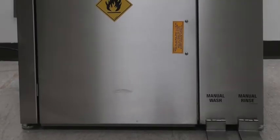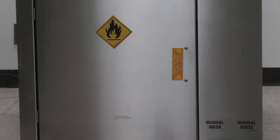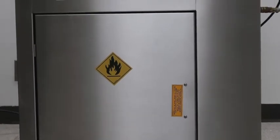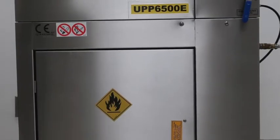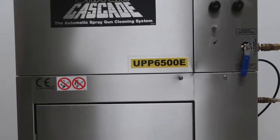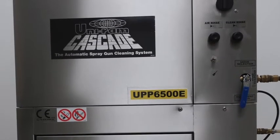Thank you for watching this overview of the UPP6500D automatic pressure pot gun and hose washer from Uniram. For more information and a full user manual, please go to uniram.com or contact your local Uniram rep.